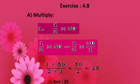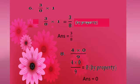Let us see a few sums in exercise 4.8. First: multiply 1 by 2 into 50. Convert the whole number into a fraction: 1 by 2 into 50 by 1. Multiply numerators and denominators: 1 into 50 by 2 into 1 equals 50 by 2. Dividing 50 by 2 gives 25. Next sum: 3 by 8 into 1. By the property of multiplication, any fraction multiplied by 1 gives the same fraction. So 3 by 8 into 1 is 3 by 8.